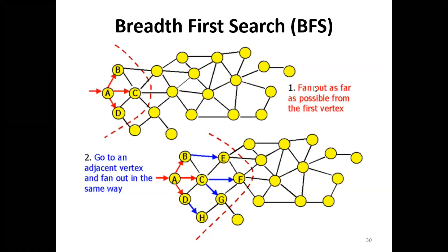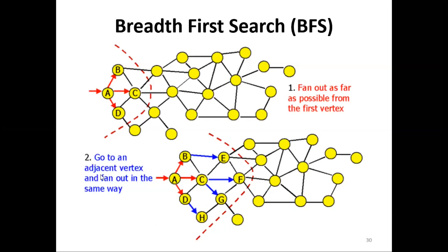The breadth first search is essentially the opposite of the depth first search. Instead of traversing as deeply as possible, it fans out — it visits all nodes adjacent to it first. It goes to an adjacent vertex and fans out in the same way, then moves to another vertex and fans out again. Looking at node A, it goes to B, C, and D. Then from C, it goes to F and G. So it keeps fanning out until it reaches the end.